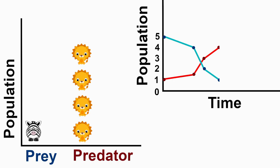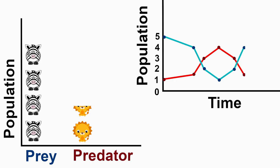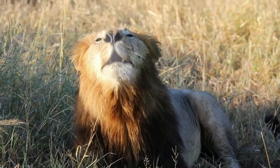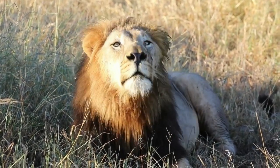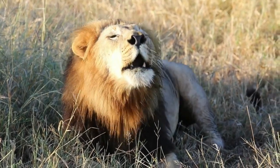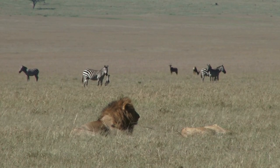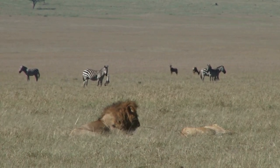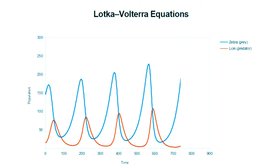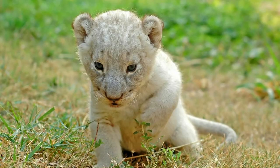Now the lion population is in trouble — they're starving to death. With few lions left, zebras rebound strongly, and we are back to the start of our cycle with a small lion population and a large zebra population. The lions didn't all die because they can eat things other than zebras, but they only thrive when zebras are present in high numbers. Clearly, the predator and prey populations are dependent on each other. The reason these cycles are offset is because it takes some generations for predator-prey cycles to respond to each other. Zebras take about two years to reproduce and lions four years.